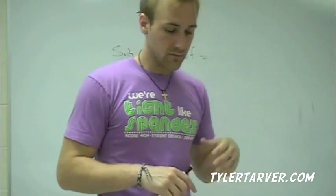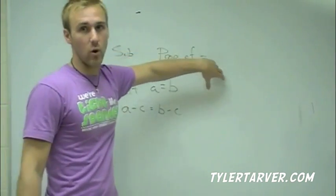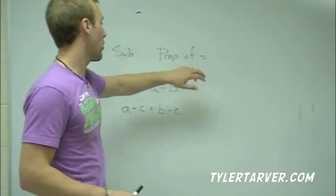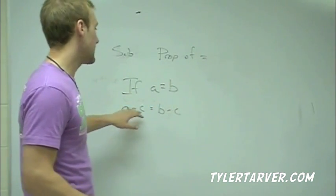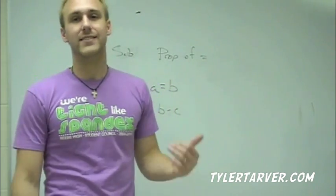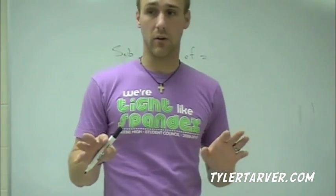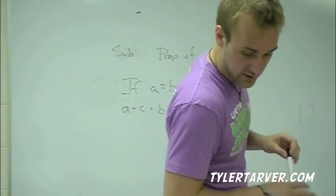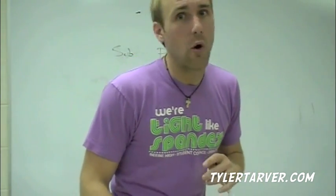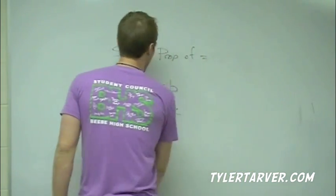We've got two more: multiplication and division — same things. Multiplication Property of Equality: if a equals b, then a times c equals b times c. Division Property of Equality: if you divide both sides by the same thing, they're still equal. You're not changing anything. So you've got addition, subtraction, multiplication, division — those are your four basic properties.